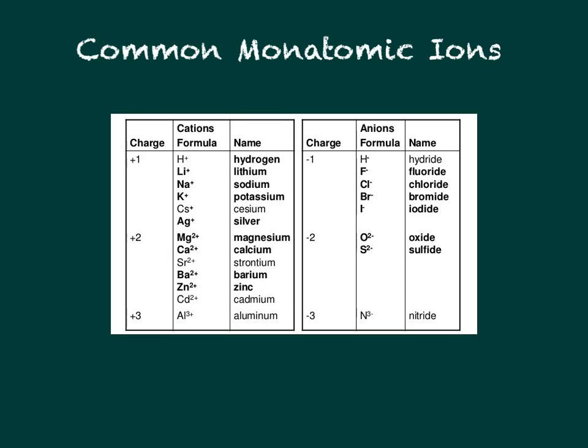This table shows a list of the most common monatomic ions. The bold ones are the most common. The positively charged cations on the left have the same names as the element names, while the anions on the right have name endings changed to -ide. Note that hydrogen is unique — it can form either a plus one or a minus one ion.